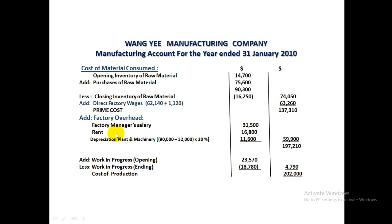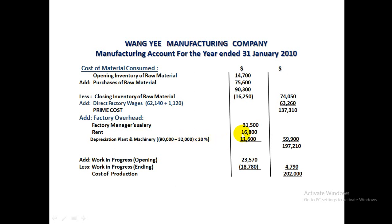The Manufacturing Account has three important parts. Since no Direct Expenses are given, Raw Material Consumed is calculated by adding Purchases of Raw Material to Opening Inventory of Raw Material, then subtracting Closing Inventory of Raw Material. Direct Wages — including the 1120 accrued — are added to Raw Material Consumed. Together these give the Prime Cost. Factory Overhead includes indirect factory expenses such as Factory Manager Salary, rent apportioned to the factory, and depreciation of plant and machinery.